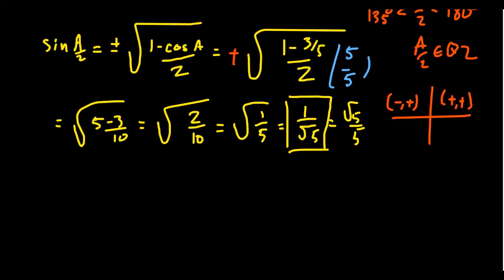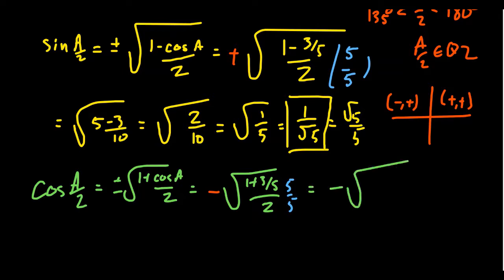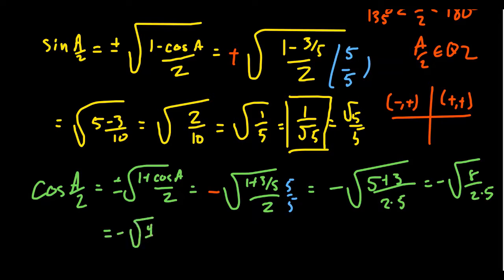For cosine of a/2, we use the half-angle identity: plus or minus the square root of (1 plus cosine a) over 2. Since a/2 is in the second quadrant, cosine is negative. Plugging in cosine a equals 3/5: negative square root of (1 plus 3/5) over 2. Multiplying top and bottom by 5: negative square root of (5 plus 3) over 10, which is negative square root of 8/10. Simplifying 8/10 to 4/5: we get negative the square root of 4/5, which equals negative 2 over the square root of 5.